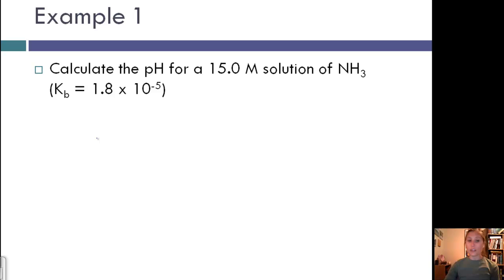The first thing that we need to do is identify the species that are contributing to OH concentration. Those species, because this is a weak acid based on the Kb value, NH3 is one of our species, and H2O is our other species. The Kb for NH3 is larger than the Kw for water, so this is going to be our dominant species.